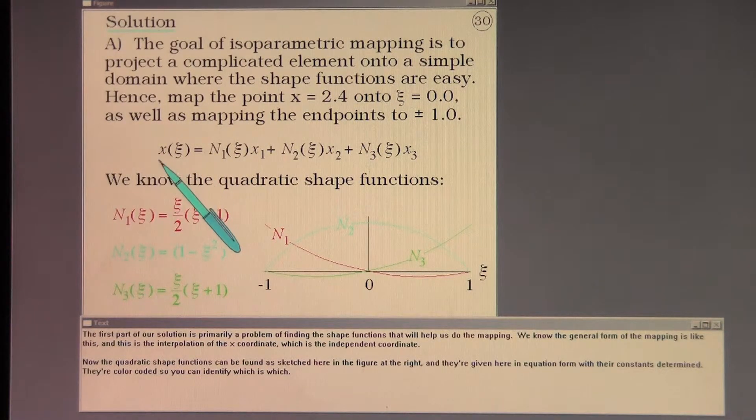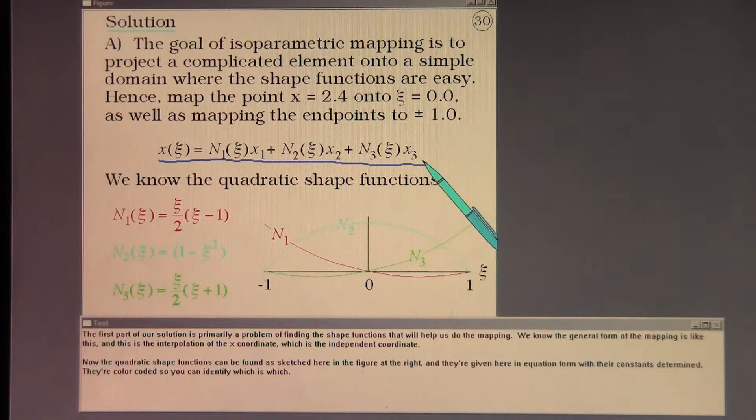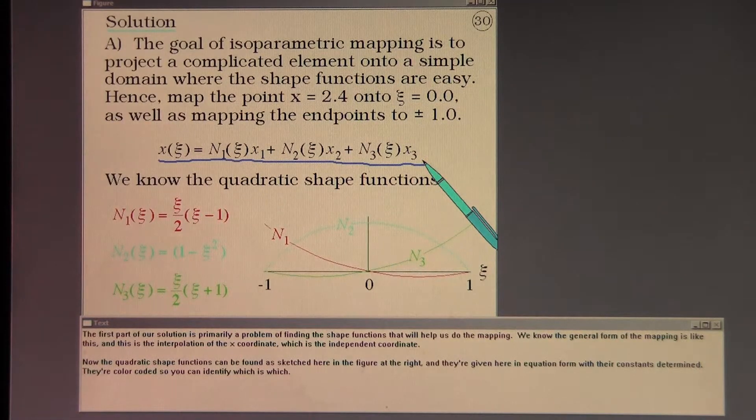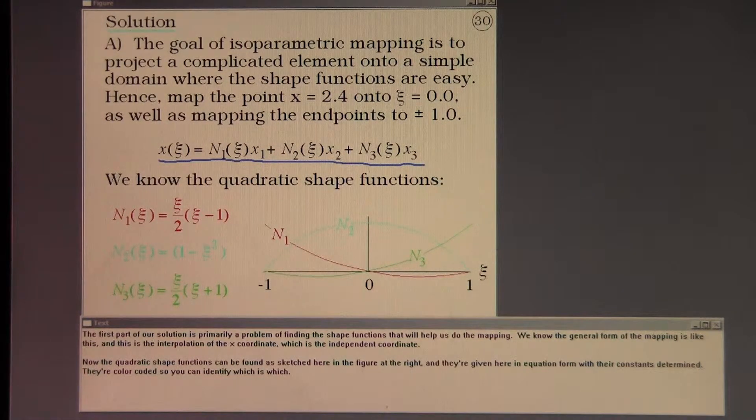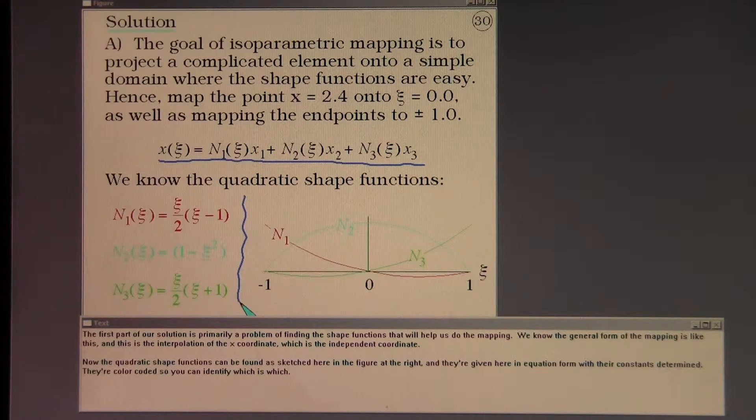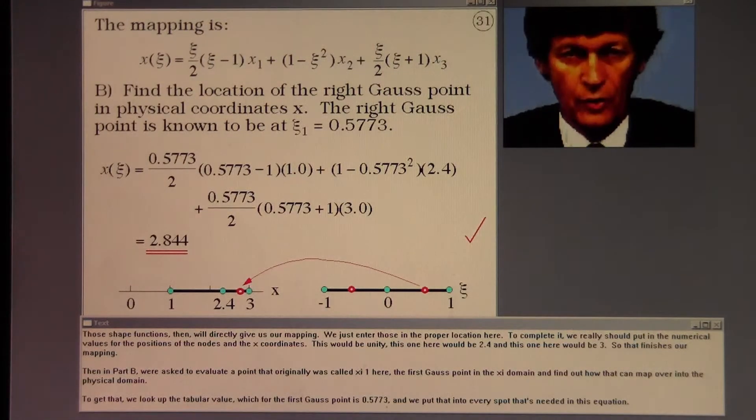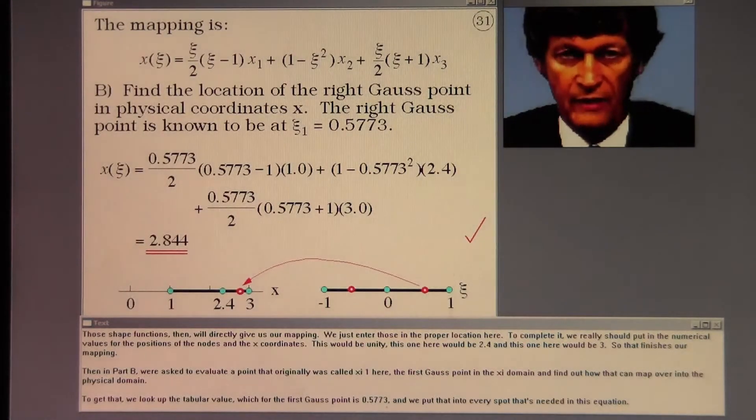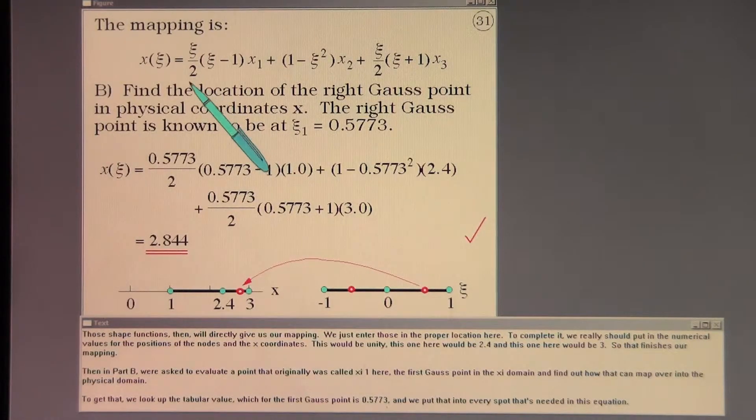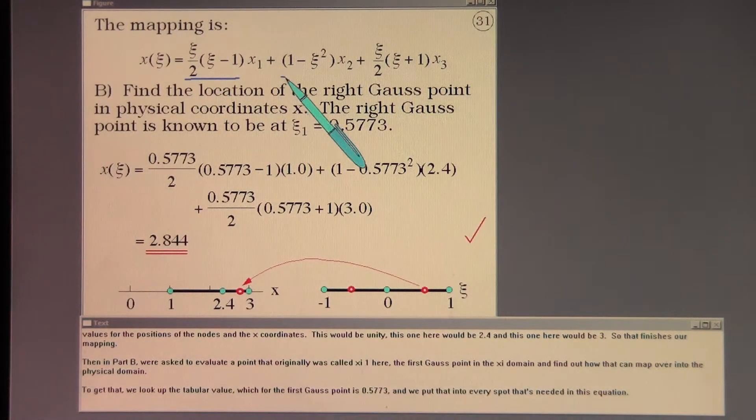We know the general form of the mapping is like this. And this is the interpolation of the X coordinate, which is the independent coordinate. Now the quadratic shape functions can be found as sketched here in the figure at the right. And they're given here in equation form with their constants determined. They're color coded so you can identify which is which. Those shape functions then will directly give us our mapping. We just enter those in the proper location here.